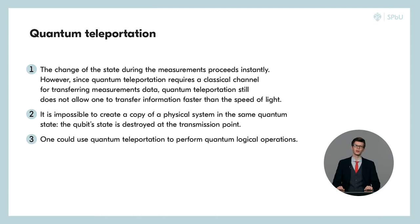In conclusion, let's point out three following features of the quantum teleportation protocol. Firstly, the change of state goes instantly during measurements. However, this still doesn't allow one to transfer information faster than light since the data about measurement is transferred through the classical channel.